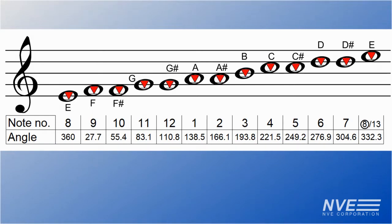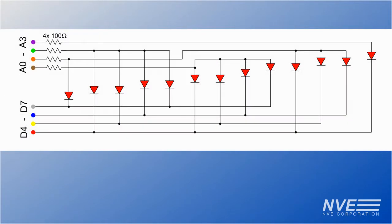The LED anodes and cathodes are multiplexed, so eight Arduino outputs can control 13 LEDs.